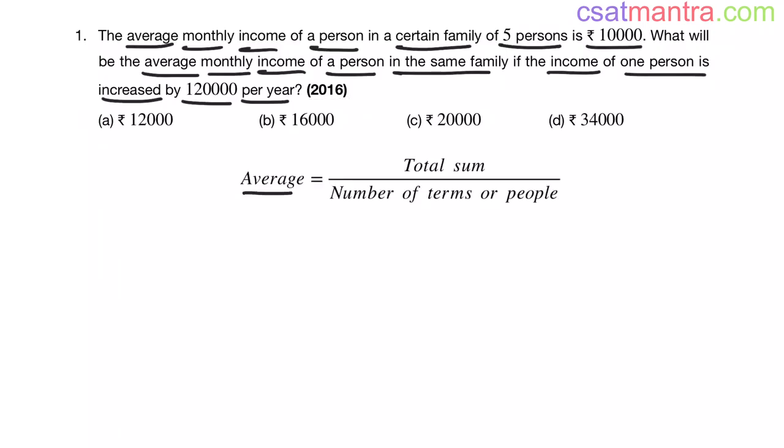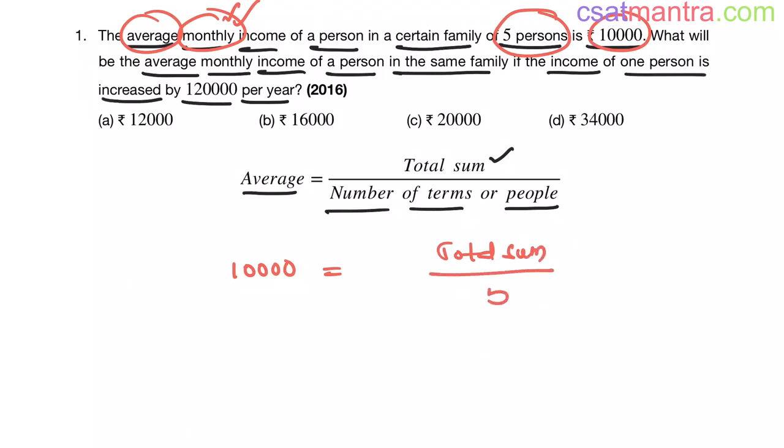We know average equals total sum by number of terms or number of people. Here monthly average is given. Remember my friends, monthly average not yearly. So monthly average is 10,000. How many persons? 5 persons. So average is 10,000, total sum we don't know, by number of people. How many? 5.